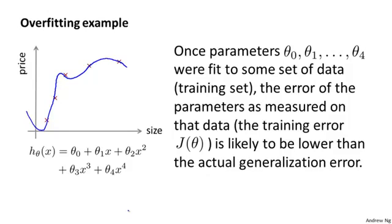Concretely, if you fit some set of parameters theta 0, theta 1, theta 2, and so on to your training set, then the fact that your hypothesis does well on the training set doesn't mean much in terms of predicting how well it will generalize to new examples. The more general principle is that once your parameters were fit to some set of data, the error measured on that same data set is unlikely to be a good estimate of your actual generalization error.